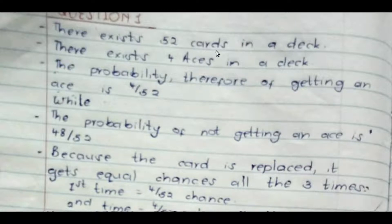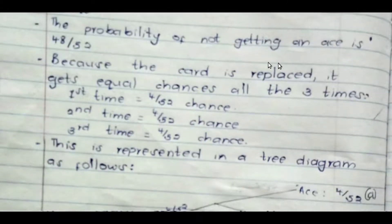So, the first question was about cards. In one deck, there are 52 cards in a standard deck. And amongst those 52 cards, there are four aces. That means four out of 52 are aces. The probability, therefore, of getting an ace is four out of 52, while the probability of not getting an ace is 48 out of 52.